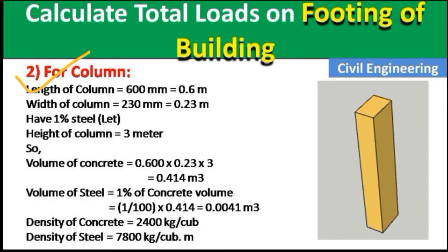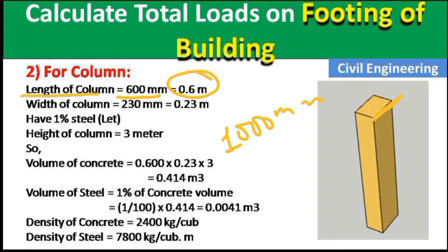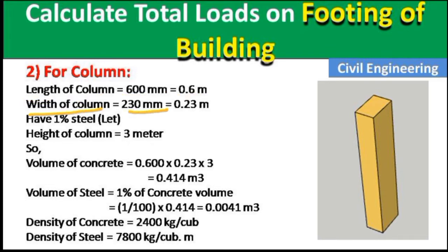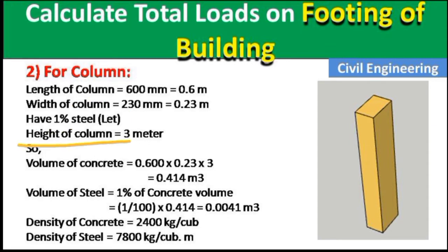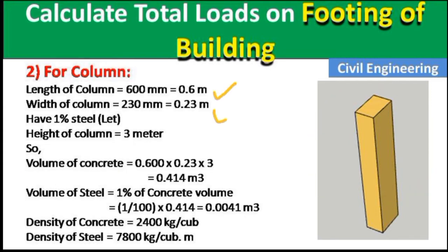Now calculating the load due to the column. Length of column = 600 mm = 0.6 m, width = 230 mm = 0.23 m, height = 3 m, and steel reinforcement = 1% of concrete volume. Volume of concrete = Length × Width × Height = 0.6 × 0.23 × 3 = 0.414 m³.